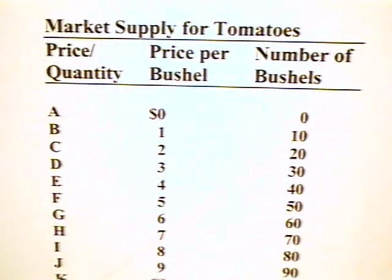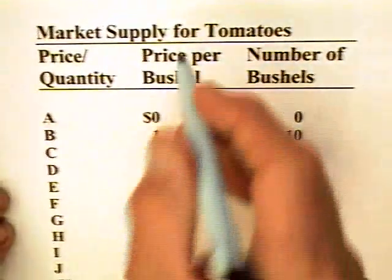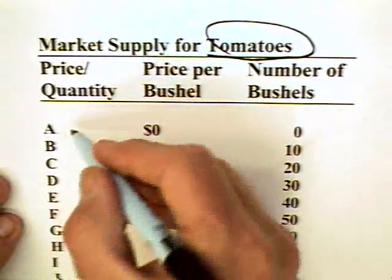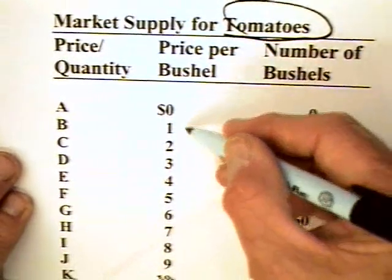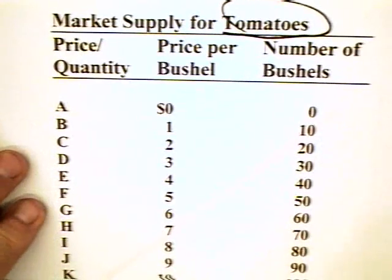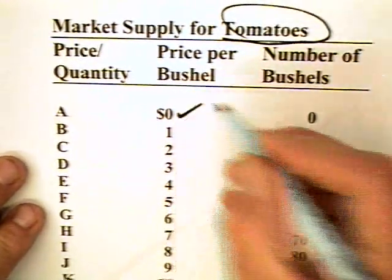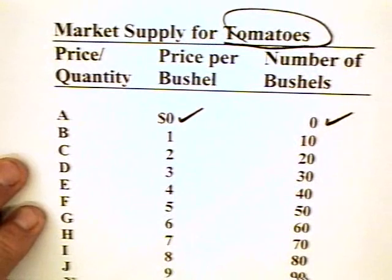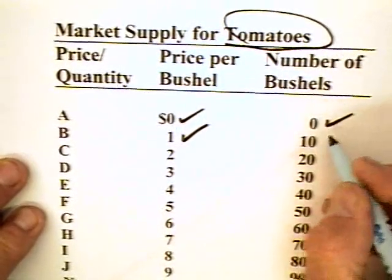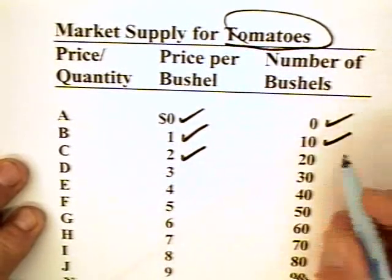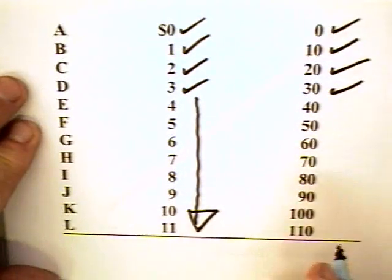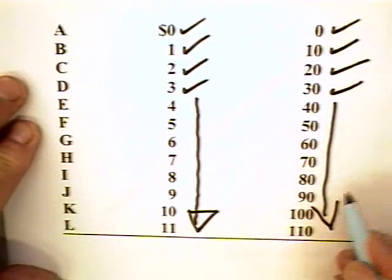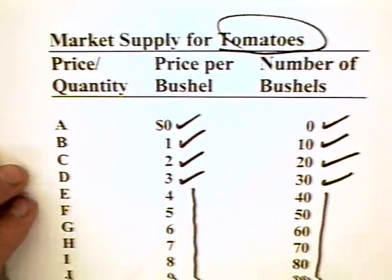Supply can be illustrated, as was demand, by a table. Here is a supply schedule that comes directly out of your textbook. We're going to be talking about the market for tomatoes. We have various price-quantity combinations from A to L on the left-hand column. At a zero price, there will be a zero quantity offered. At a price of $1, the quantity offered on the market will be 10 bushels; price of $2, 20 bushels; $3, 30 bushels, and so on up the line. As the price goes up, the quantity supplied by producers goes up. This is what we mean by supply.